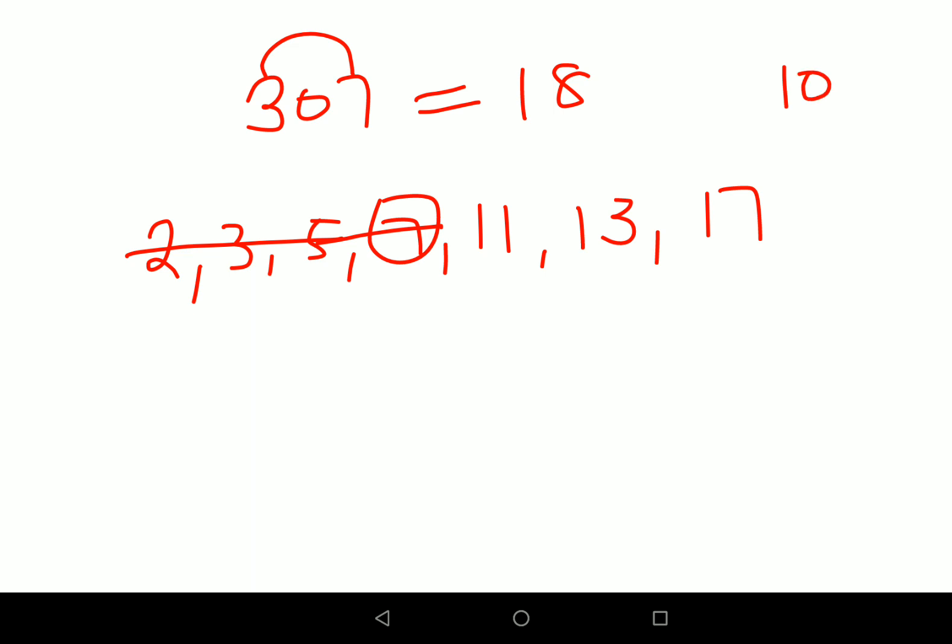Whatever answer you get, if it is either 0 or a multiple of 11, then you can say that this number is divisible by 11. Since 10 is not divisible by 11, I can say 307 is also not divisible by 11. Similarly for 13 and 17, they are not divisible, so I can very quickly say that 307 is a prime number.